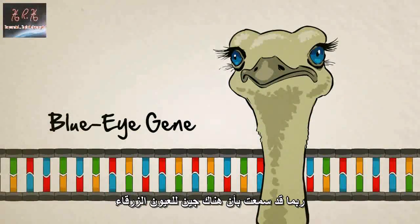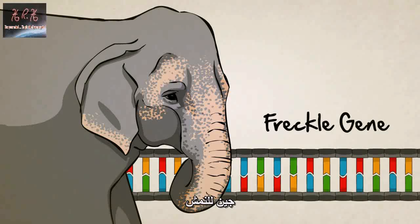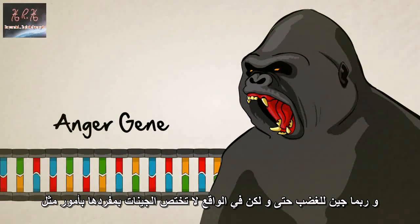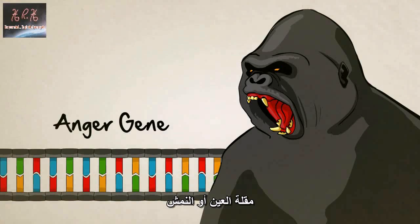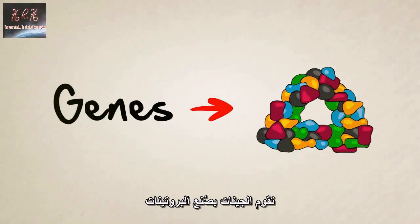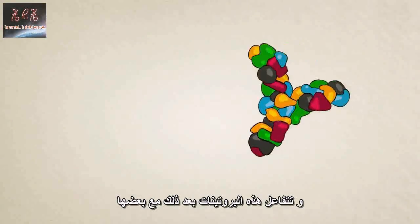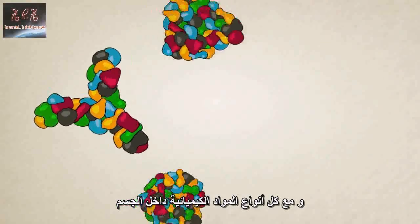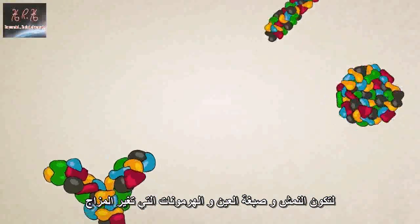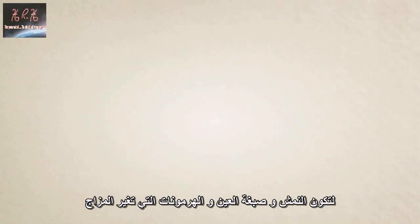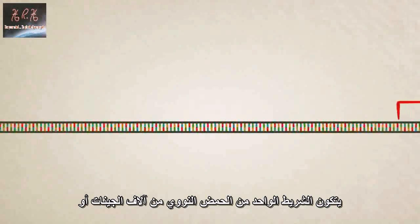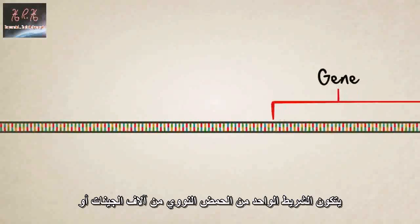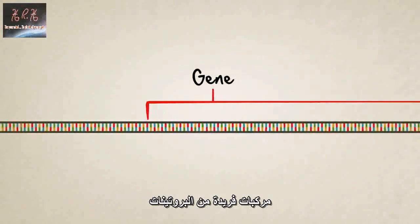You might have heard that there's a blue-eyed gene, a freckle gene, possibly even an anger gene, but single genes don't literally make things like eyeballs or freckles or temper tantrums. Genes make proteins — those proteins interact with each other and all sorts of chemicals inside the body to build things like eye pigments, freckles, and mood-altering hormones.